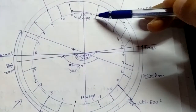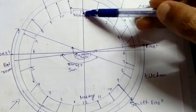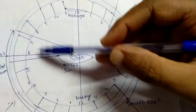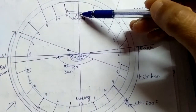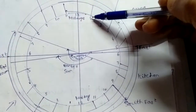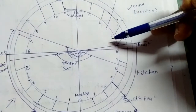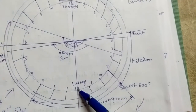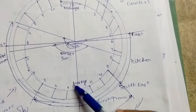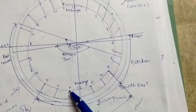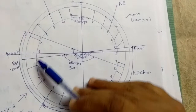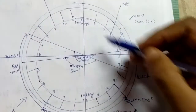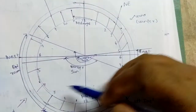The circle represents time, starting at midnight — 12 a.m., 1 a.m., 2 a.m., 3 a.m., 4 a.m., 5 a.m., 6 a.m., and so on up to 12 p.m. (midday or noon), then 1 p.m., 2 p.m., completing the full circle back to midnight. This is one complete circle representing 24 hours.